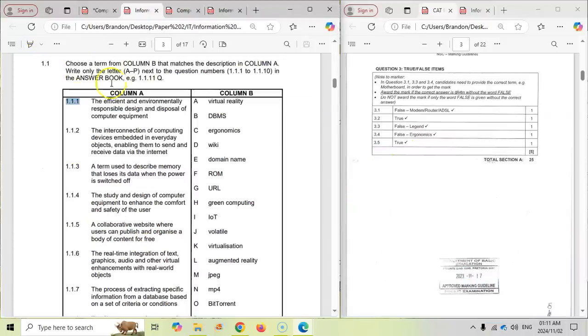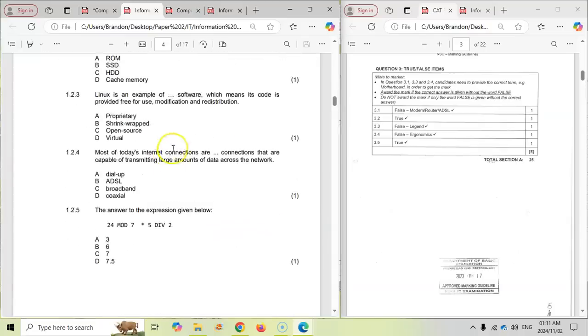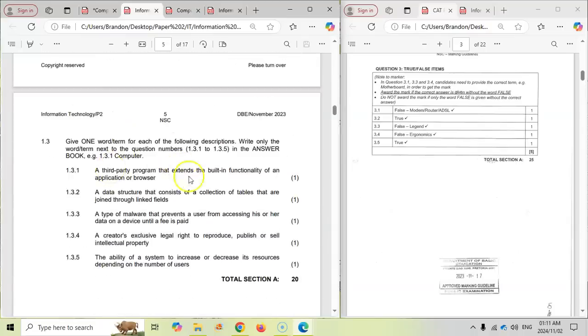And then for IT students, remember you've got a bunch of matching terms in the beginning, about 10 of them, then about five multiple choice. Well, this is what they had last year. And then some definitions that you had to write down what the term is for that particular definition. So that's about 20 marks for the IT students. That gives you an idea of what to look at.